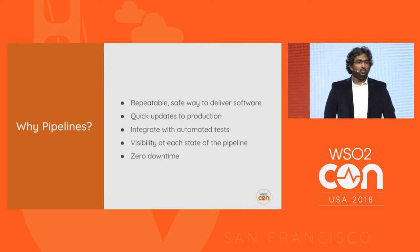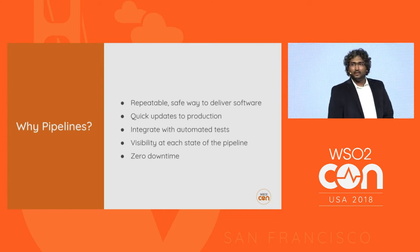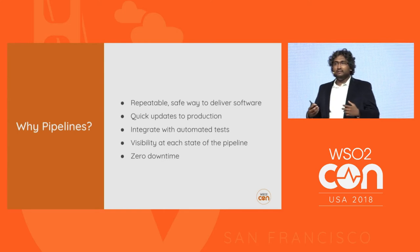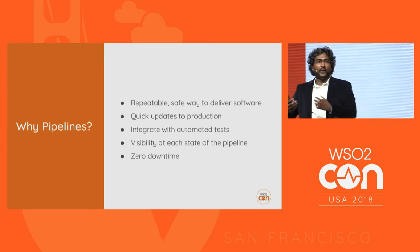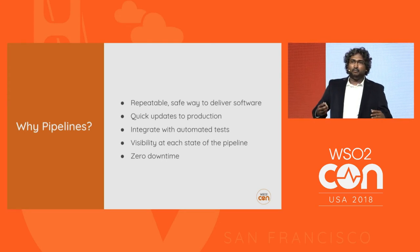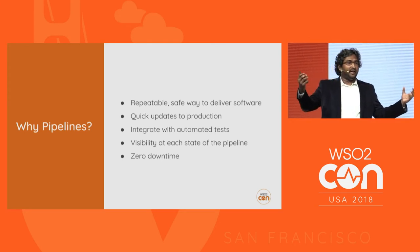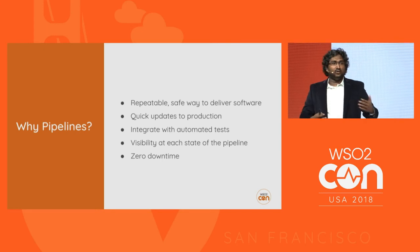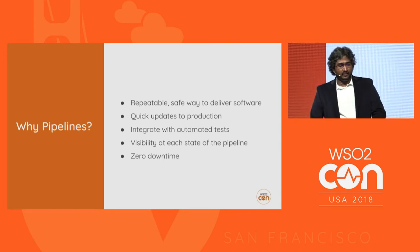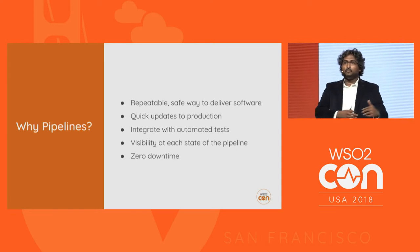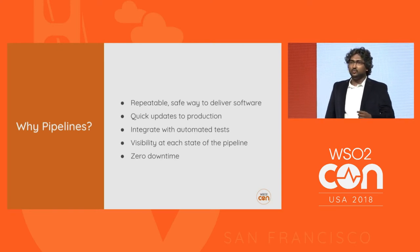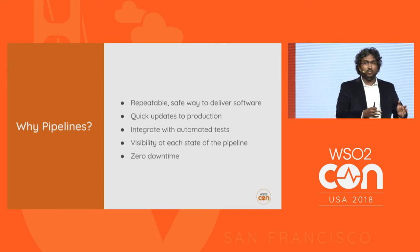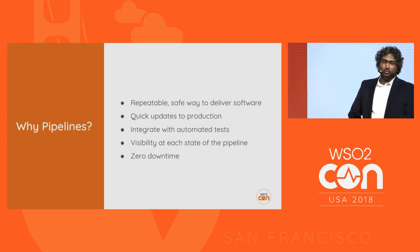Why pipelines? Pipelines are a repeatable, safe, and secure way to deliver changes into production as quickly as possible. Pipelines enable you to integrate various sorts of other systems — especially tests — and execute those tests in a fully automated way. Since everything is automated when you create pipelines, it's very easy to add checkpoints and monitoring, which will give you visibility of what happens and when things happen as you move along the pipeline.